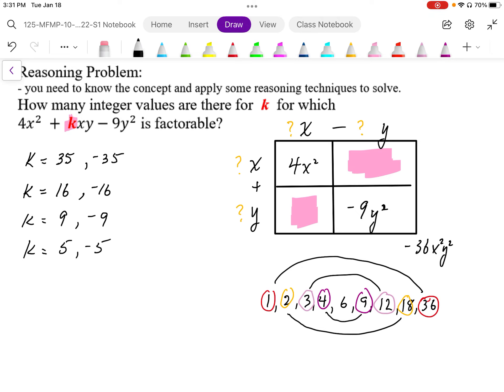And then it could be 6 and 6 to give us the 36, so then the k value is going to end up being 0. So these are the different values that we can end up with for k.